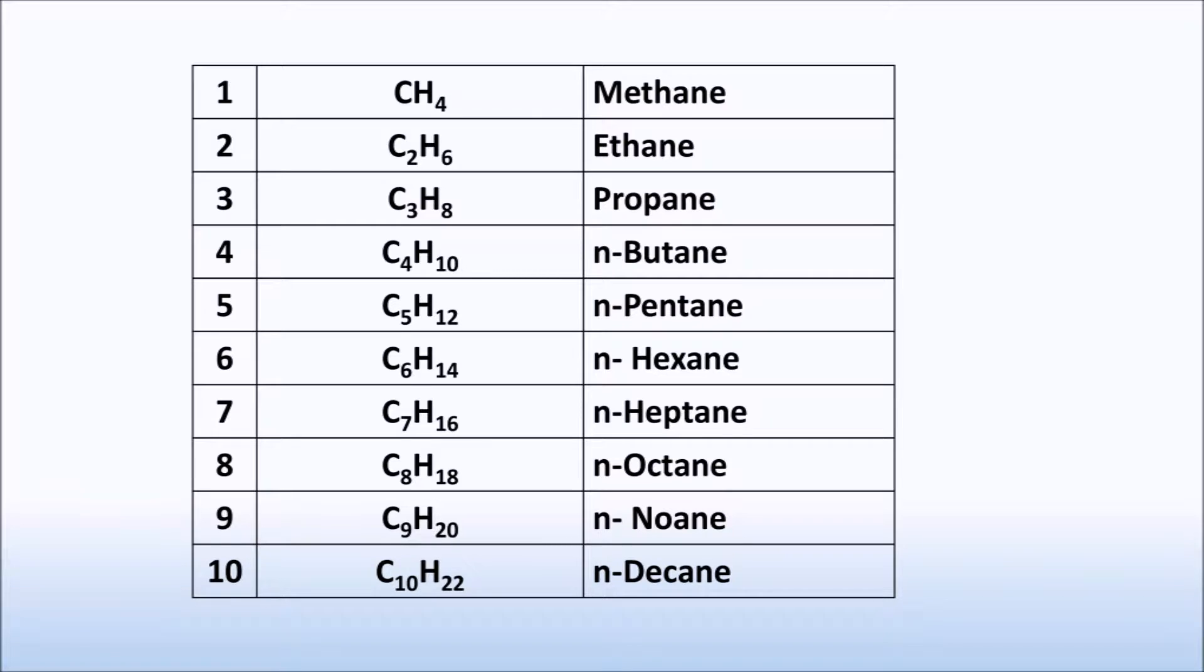For naming five or higher members, Greek number roots are used. The fifth alkane is pentane, sixth is hexane, seventh is heptane, and next are octane, nonane, and decane.